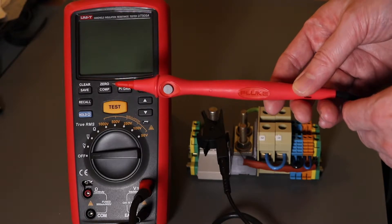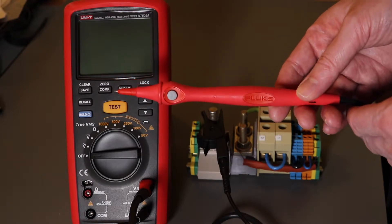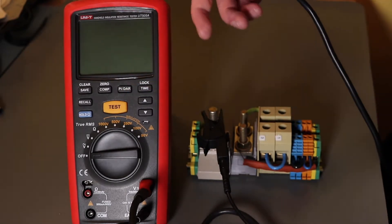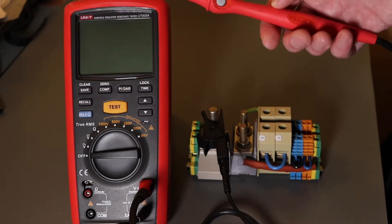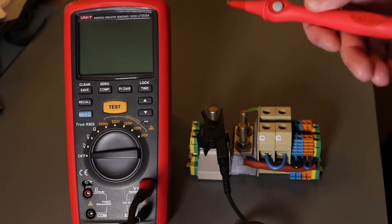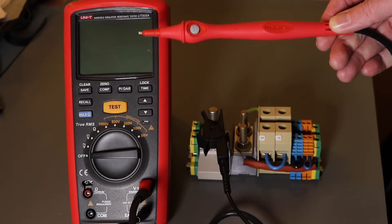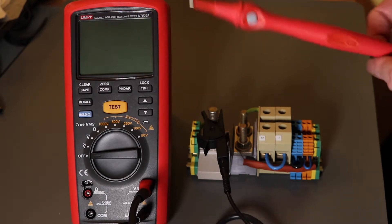This is the Fluke remote probe. The UniT itself doesn't come with a remote probe, you have to buy that as an option. So I looked through the selection that I had to see if one would fit and the Fluke one does actually fit okay.